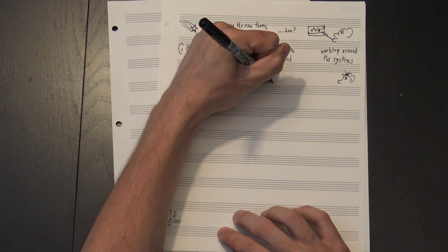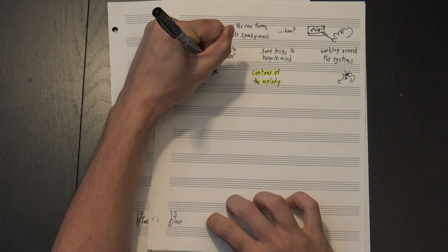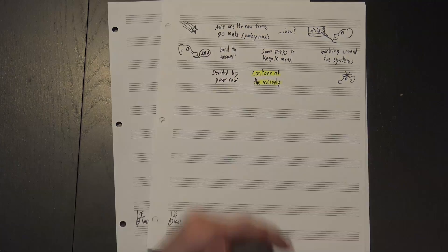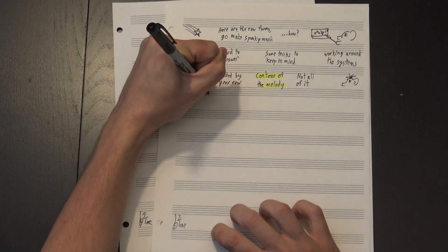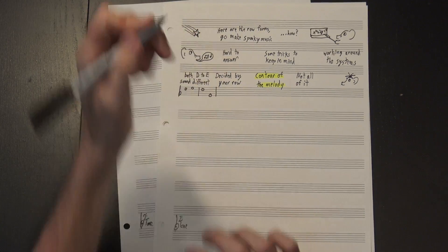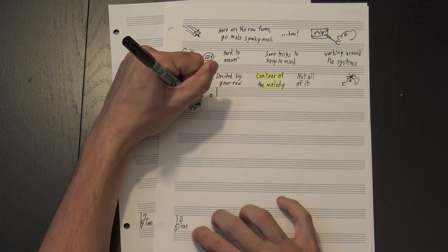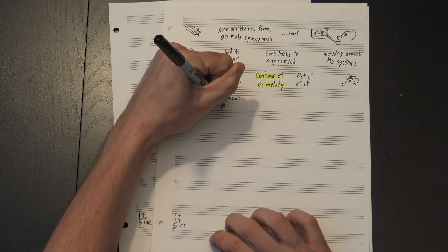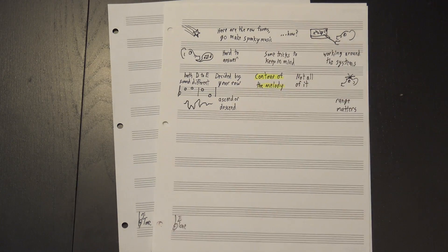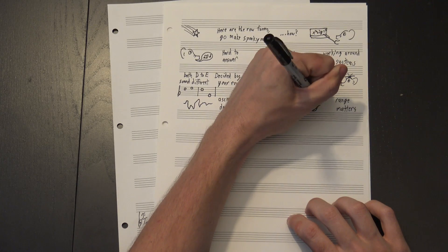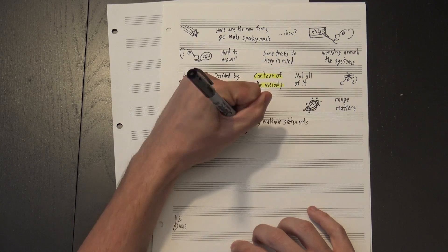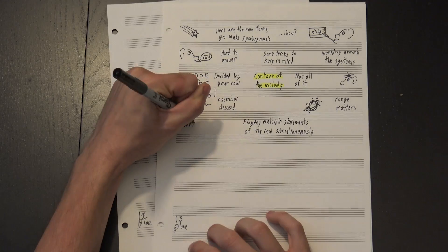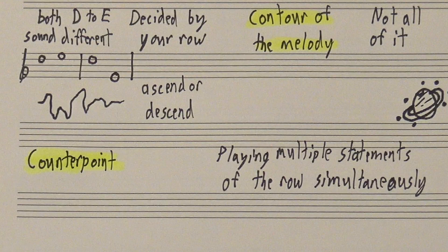For instance, the contour of the melody still matters. Some of that is decided by your row, but not all of it — this and this are both D to E, but they sound very different. You can control the shape of your melody a lot just by choosing whether to ascend or descend. Range also matters, and where you put a line changes how the listener hears it. But a lot of the artistry comes from playing multiple interconnected statements of the row simultaneously — this is a form of counterpoint, and a lot of the tricks for making counterpoint work also apply here.